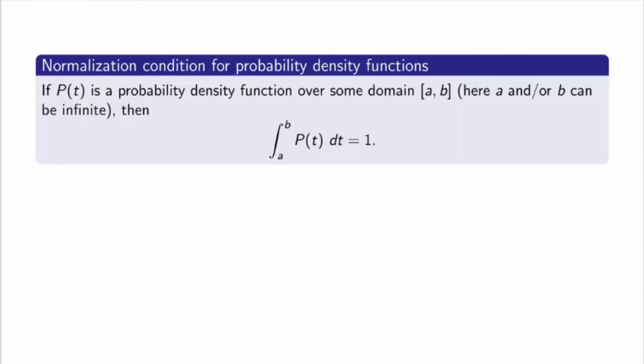This gives us something called the normalization condition for probability density functions: if you take any probability density function defined over some domain A to B — where A and B could be infinite — then the integral of the density function over its whole domain is always equal to one. If that's not true, it's not a probability density function. So if asked to show something is a probability density function, you need to show that the integral over its whole domain equals exactly one.